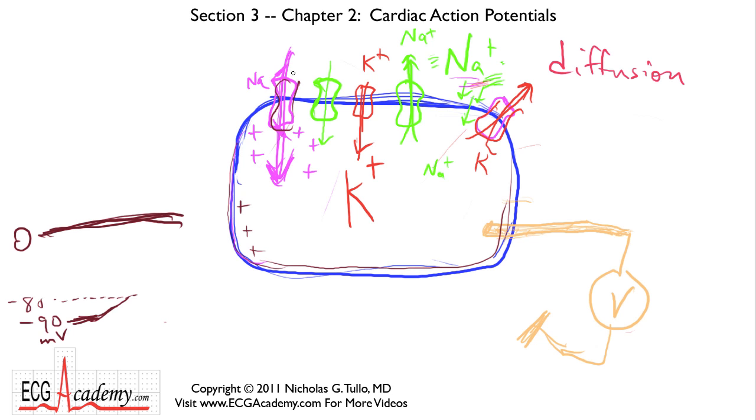Sodium is able to rush into the cell, making the inside of the cell much more positive than it was before. This membrane gradient, this voltage across the membrane that we're measuring with the voltmeter, suddenly becomes positive.